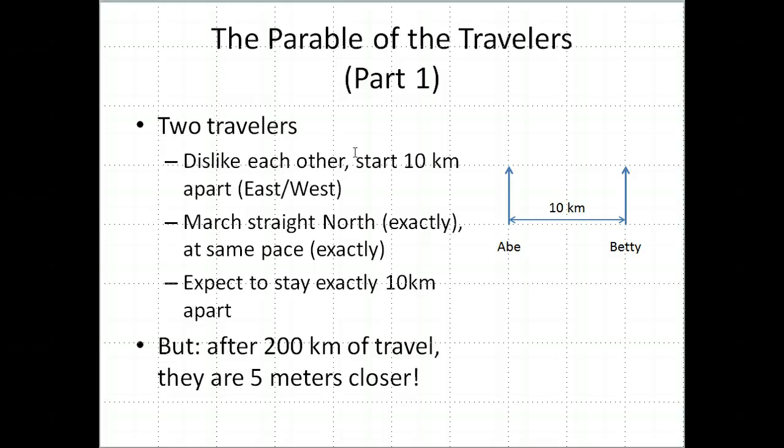So there's two travelers. They dislike each other, so they start their journeys 10 kilometers apart, exactly east-west from each other, and their names are Abe and Betty. And they march straight north, exactly straight north, and we're just supposed to assume that they are incredibly accurate at that. They march at exactly the same pace, with incredible accuracy. And what they expect is to stay exactly 10 kilometers apart.